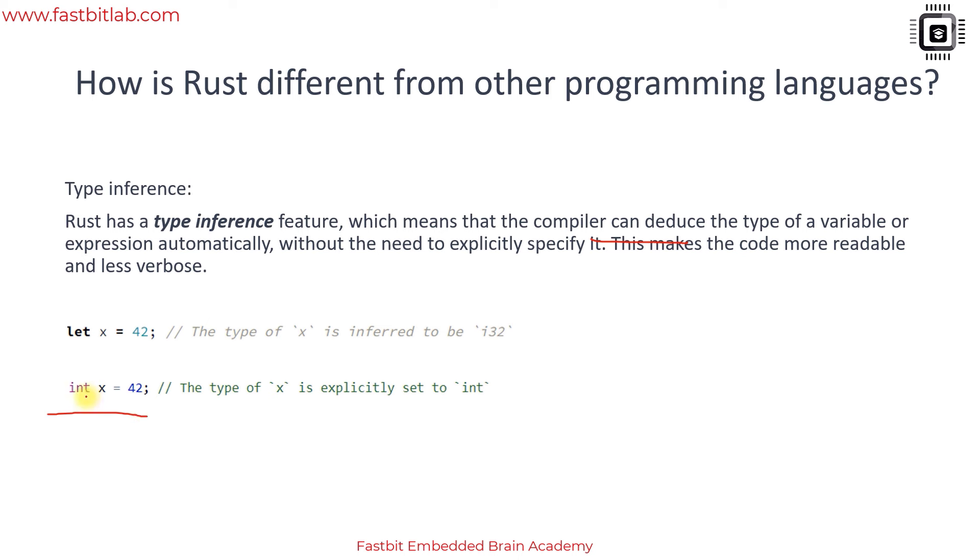This makes the code more readable and less verbose. For example consider the C statement here, a variable definition where you have to mention the data type. If you don't mention it you cannot think like the C compiler will assume the x as int. C doesn't work like that or C++.